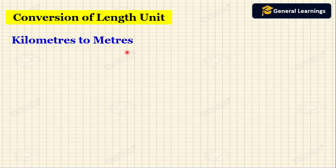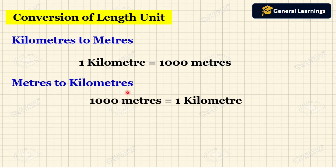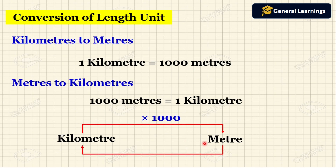Now we are going to convert from kilometers to meters. 1 kilometer equals 1000 meters. To convert kilometers to meters we need to multiply by 1000. In the same way, 1000 meters equals 1 kilometer. To convert meters to kilometers, divide the number of meters by 1000. In simple terms: converting kilometers to meters — multiply by 1000; converting meters to kilometers — divide by 1000.